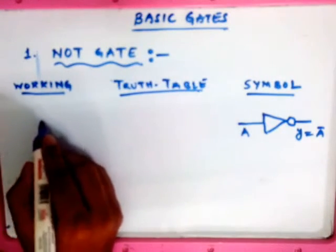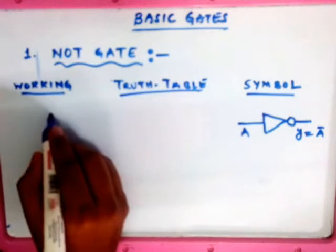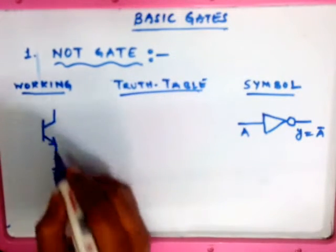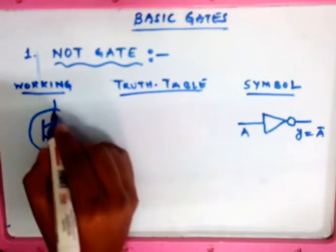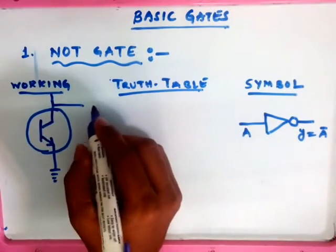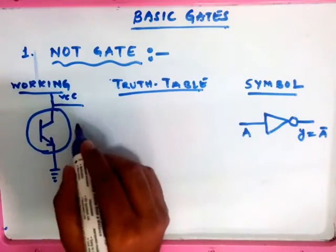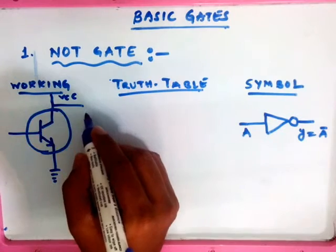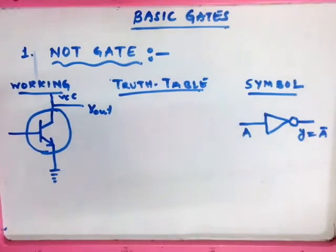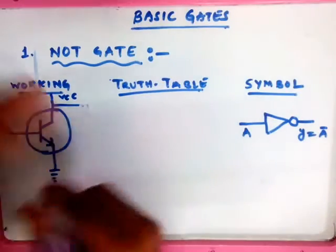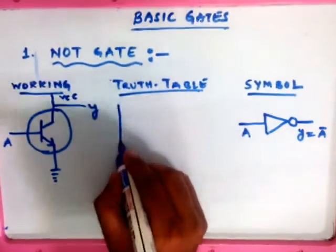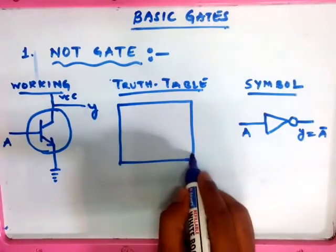Now let us look at the working. We will take one NPN transistor whose collector is connected to the VCC. The output is over here — this is our output Y and this is the input A. The truth table has only one input and one output.